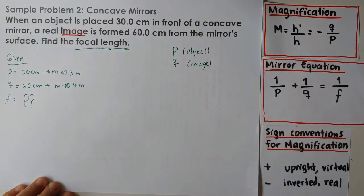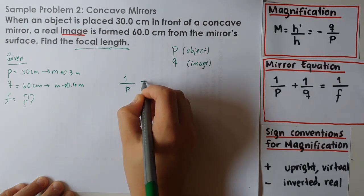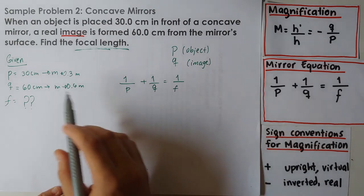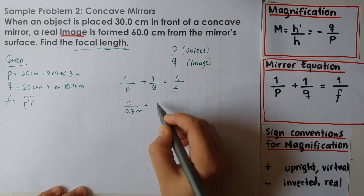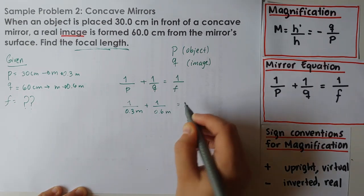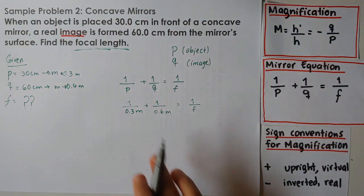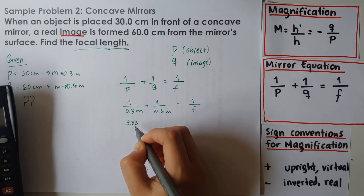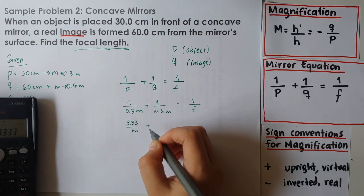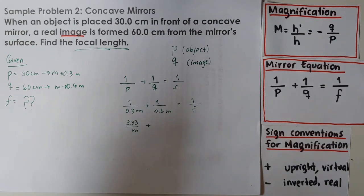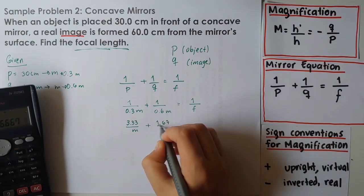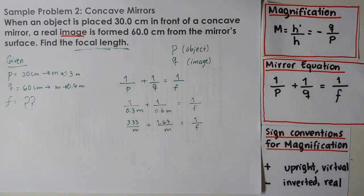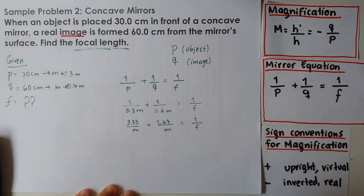We write the equation first: 1 over P plus 1 over Q equals 1 over F. So we have 1 over 0.3 meters plus 1 over 0.6 meters equals 1 over F. Perform this in your calculator. 1 divided by 0.3 gives 3.33 inverse meters, and so far we have 3.33 plus the second term equals 1 over F.